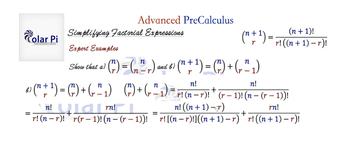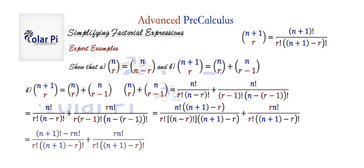Since the denominators are already equal, all we have left to do is simplify in the numerators. To do that, in this first quotient, let's distribute the n factorial to these two terms — I say two terms because n plus one I'm counting as one term. So n factorial times n plus one is just n plus one factorial, and then we'll have minus n factorial times r, which is minus r times n factorial.